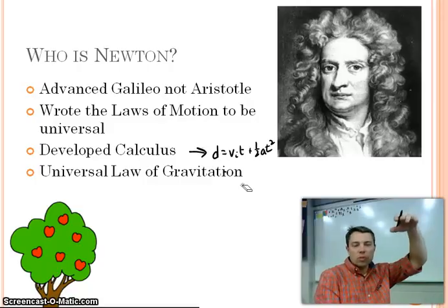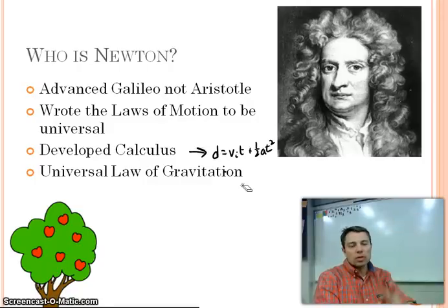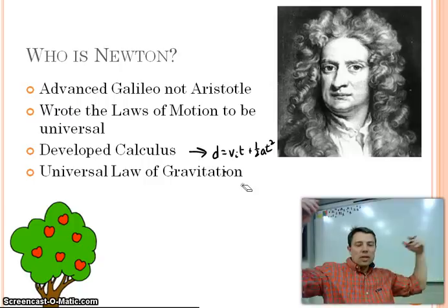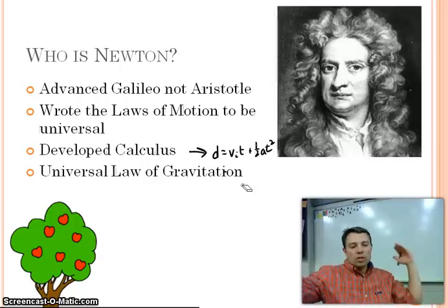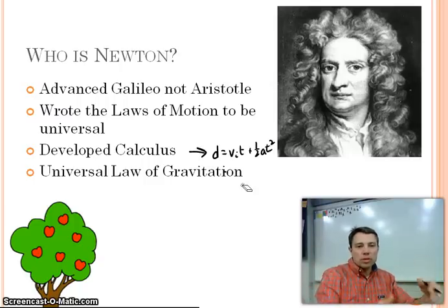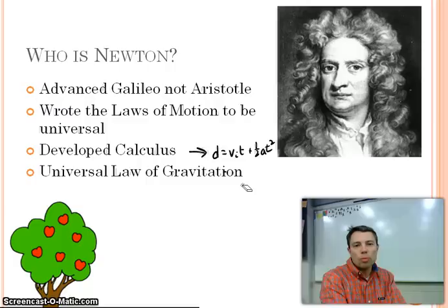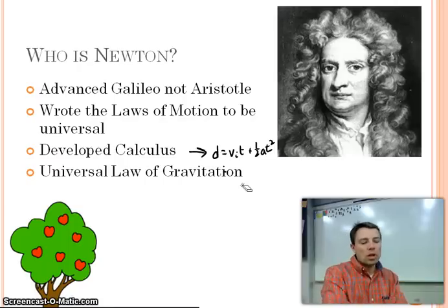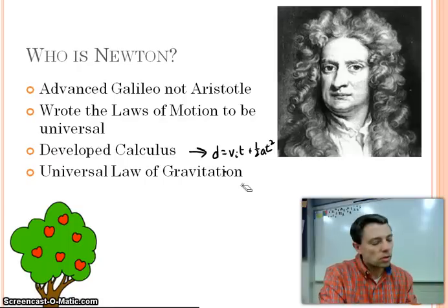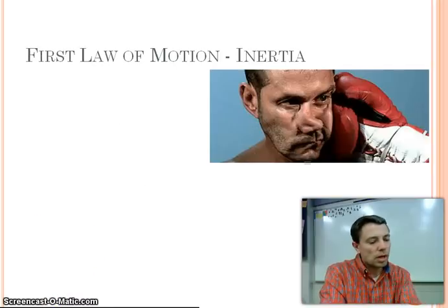And so then he started to look at this and said, well, there's got to be this whole gravity thing, this acceleration that Galileo was talking about. And so he started to say, well, all objects have mass, and so all objects are going to have some kind of a pull or an attraction between each other. And this is where he developed the universal law of gravitation. So it worked not only between the apple and the earth, but it works between the earth and the moon and the earth and the sun.